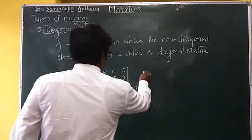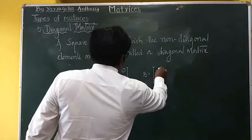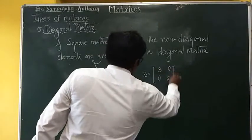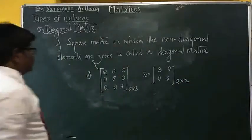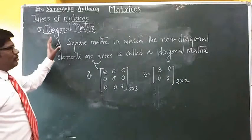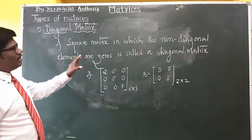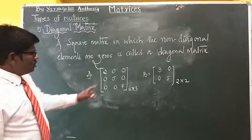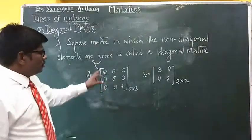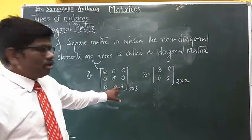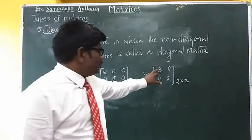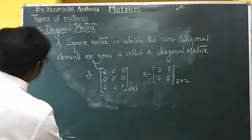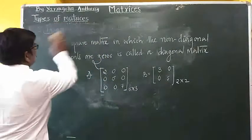Let me take a 2x2 matrix for you which is a diagonal matrix. A diagonal matrix is a square matrix in which non-diagonal elements are zeros. Only the elements should be along the diagonal. Here we see the elements are only along the diagonal and non-diagonal elements are zeros. Such a matrix is called a diagonal matrix.